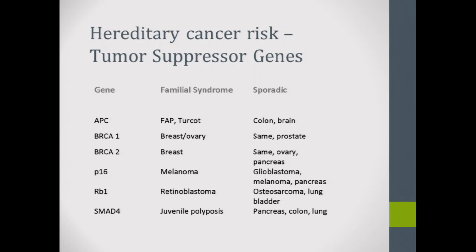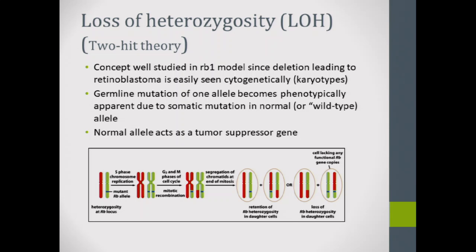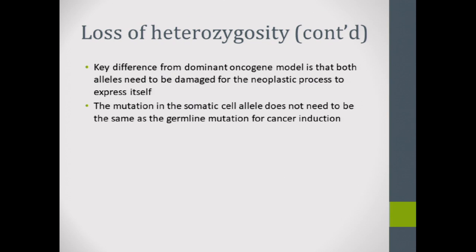There are more tumor suppressor genes and their corresponding syndromes — we'll discuss the APC, and BRCA will be covered in breast lectures. The classic two-hit theory was studied in the RB1 retinoblastoma model: a germline mutation in one allele becomes phenotypically apparent due to somatic mutation in the other wild-type allele. We'll revisit this as it relates to colon cancer.